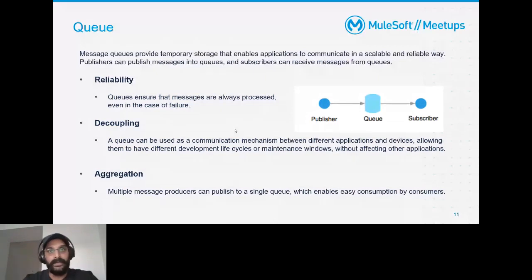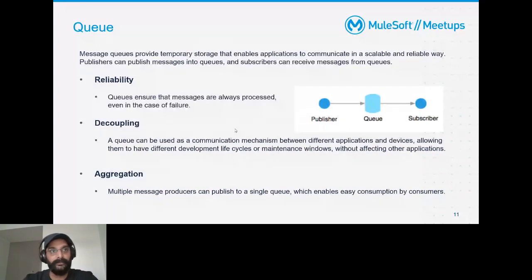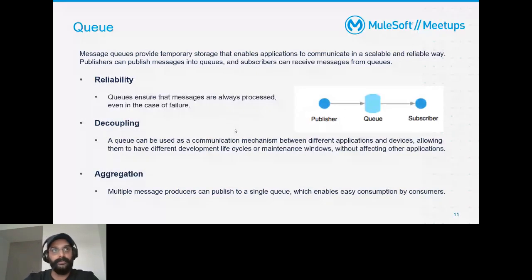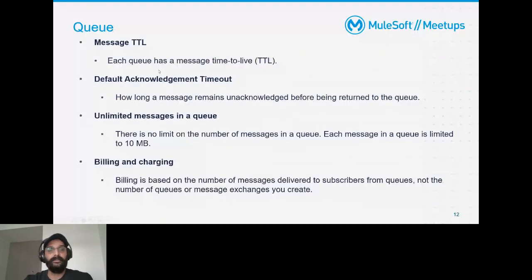Decoupling means all consumers have their own lifecycles and maintenance windows and can process individually without affecting other consumers. Aggregation means multiple message producers can publish to a single queue for easy consumption. Message TTL — time to live — means each message in the queue will expire and be deleted once its TTL is reached.